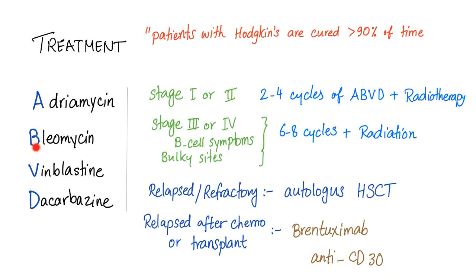Treatment of Hodgkin's uses ABVD: Adriamycin, bleomycin, vinblastine, and dacarbazine. Stage 1 or 2: two to four cycles of chemo plus radiation. Stage 3 or 4, B symptoms, or bulky sites: six to eight cycles plus radiation only to bulky sites. For relapsed or refractory disease, use autologous hematopoietic stem cell transplant. If relapsed after chemo or transplant, try brentuximab — a monoclonal antibody against CD30, which is a good target since Reed-Sternberg cells are CD30-positive.